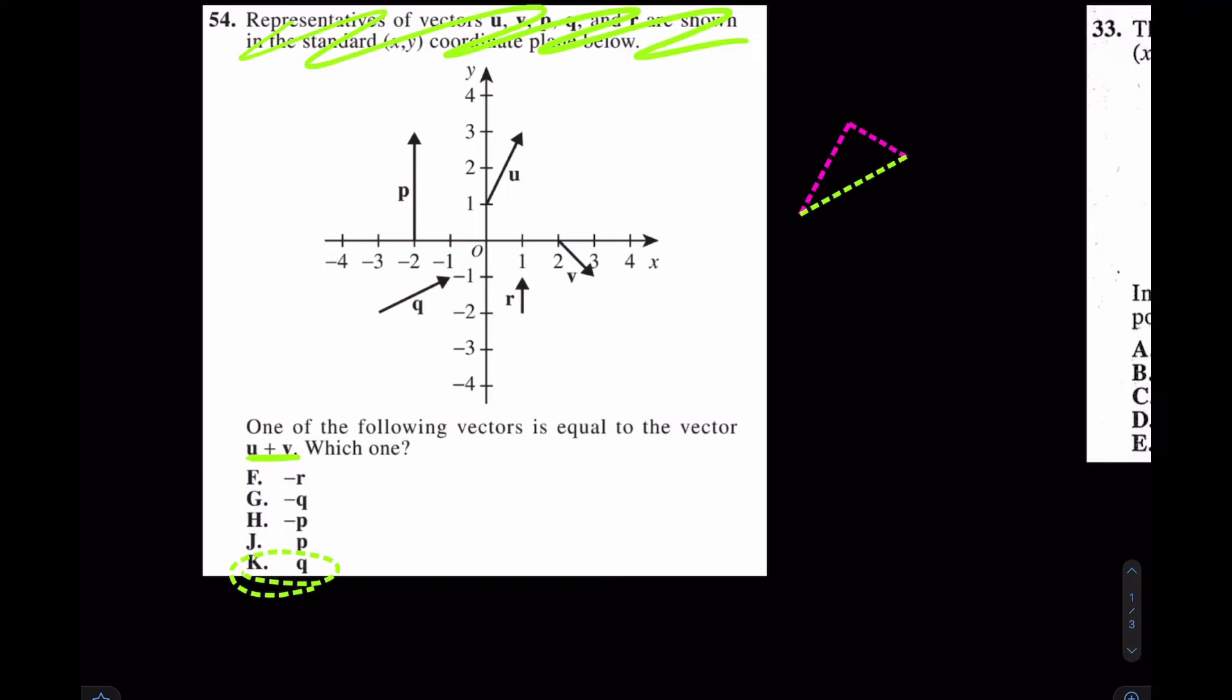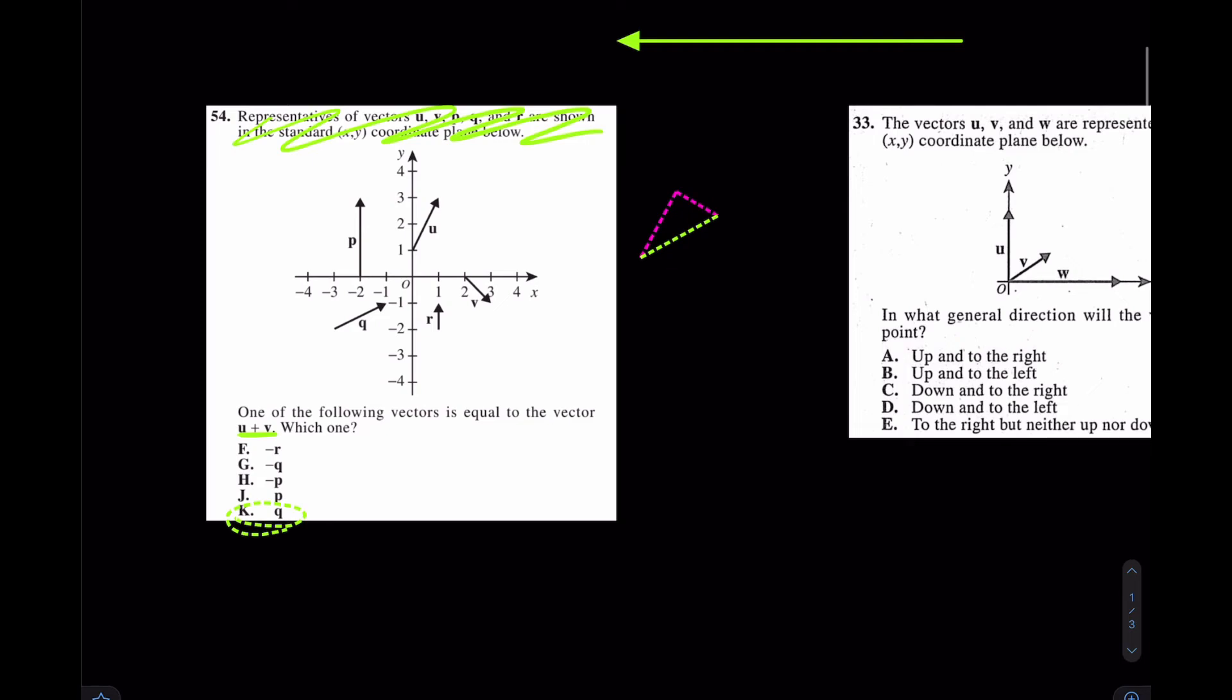Really, that's called the resultant vector for those of us that took physics. That's 54. I want to try another one. Let's get the hang of this.